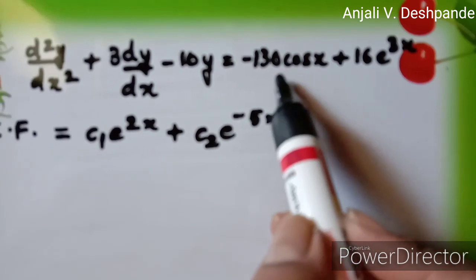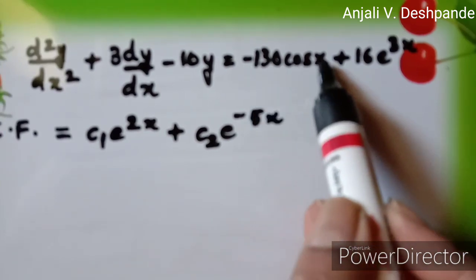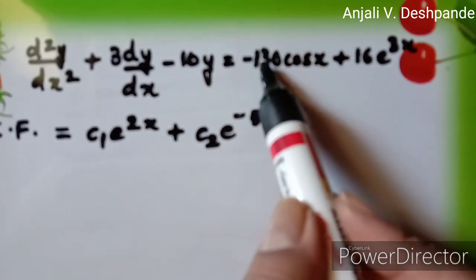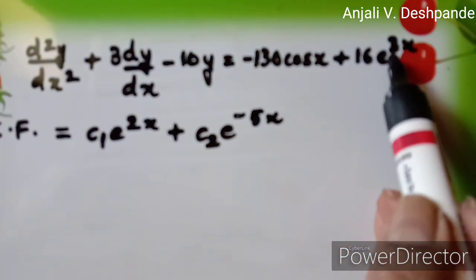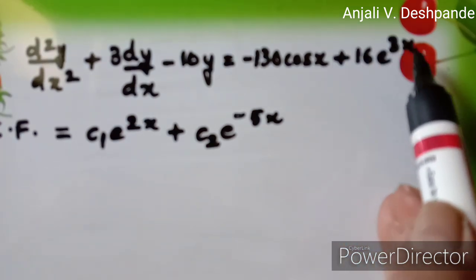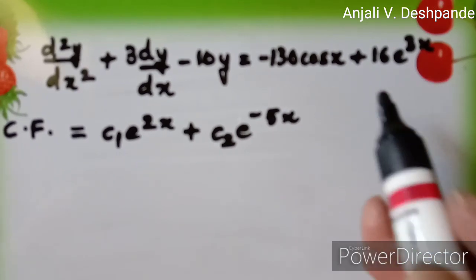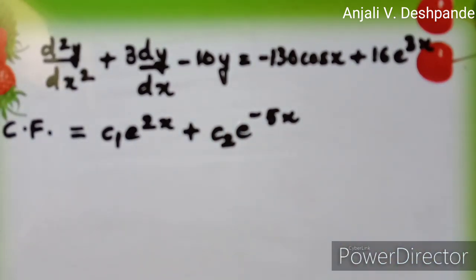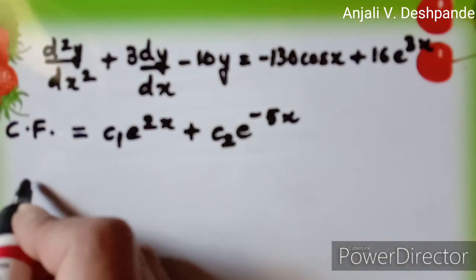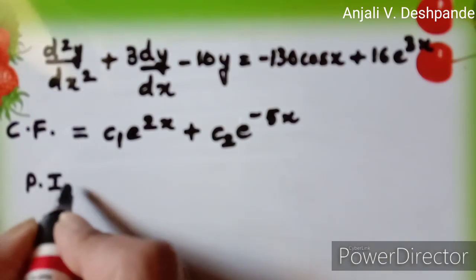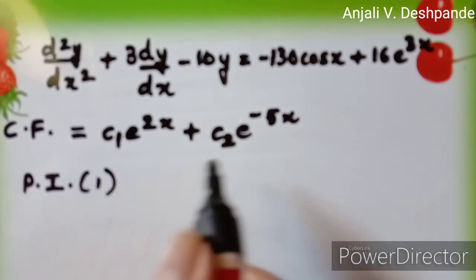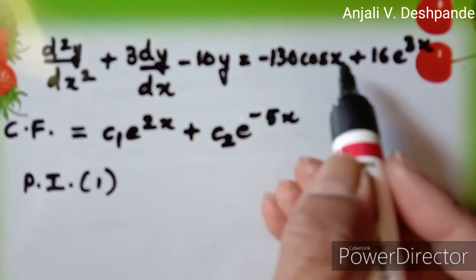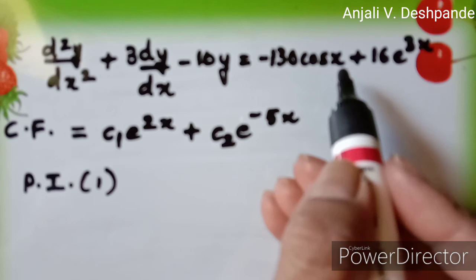Over here in the RHS, we can see that there are two functions. One of them is minus 130 cos x and the second one is 16 into e raised to 3x. So, we are going to find the particular integral going step by step. First, we will find PI for the first function, that is minus 130 cos x.